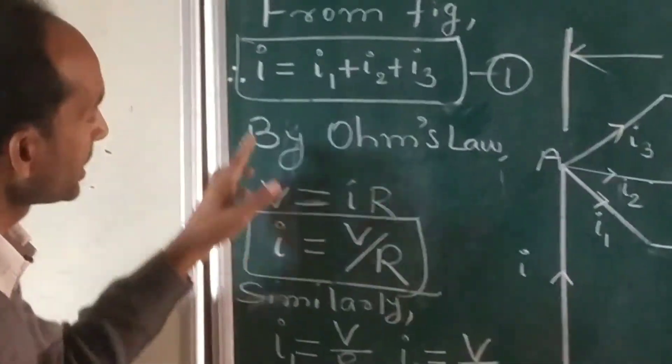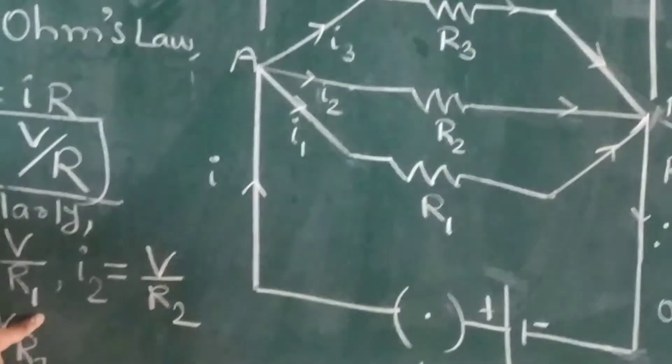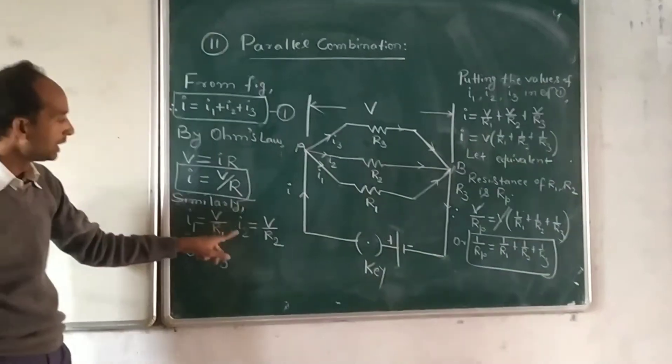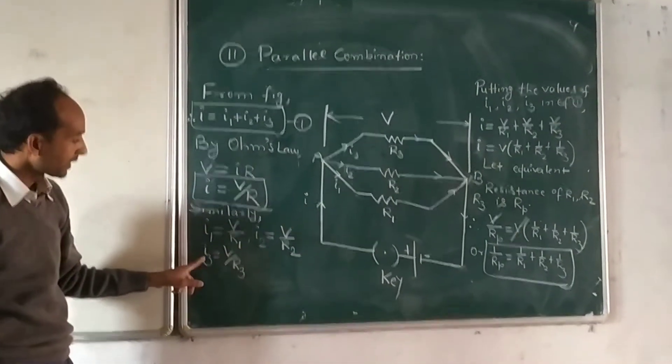I1 equals V by R1 because potential difference is same in each branch. I2 equals V by R2 and I3 equals V by R3.